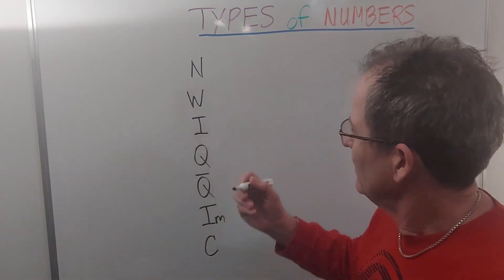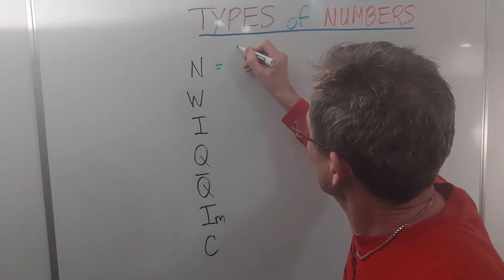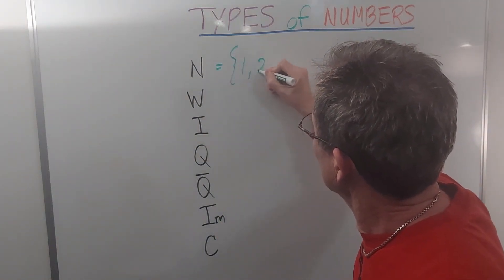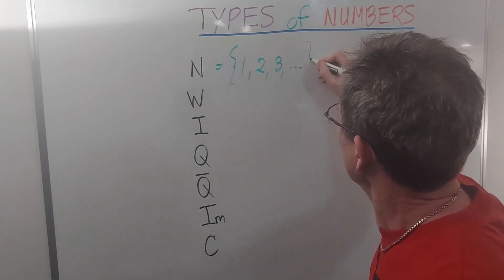The natural numbers are the basic counting numbers, so 1, 2, 3, and so on to infinity.